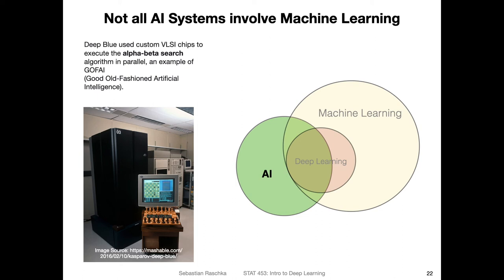Just one more example of an AI system that does not involve machine learning or deep learning: Deep Blue, the old chess computer, is not based on machine learning. It uses an alpha-beta search, which is a search algorithm for finding good chess moves. That would be an example of good old fashioned artificial intelligence not involving machine learning — though there are definitely other such examples too.